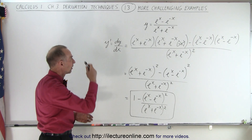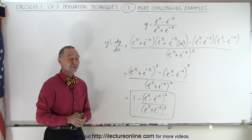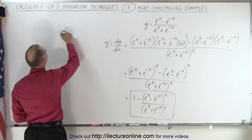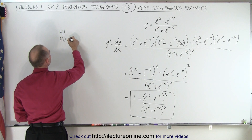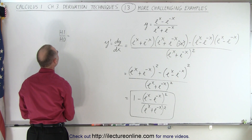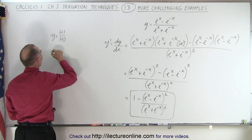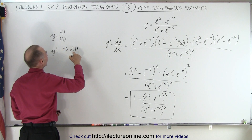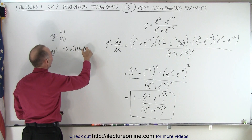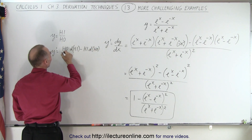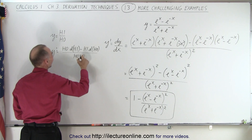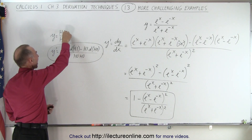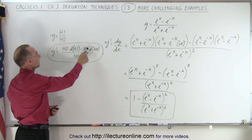And that is how we find the derivative of something that looks as strange as that. Remember — it's high over whole. If y equals high over ho, then y prime equals ho d-high minus high d-ho, all over ho-ho. Ho d-high, minus high d-ho, all over ho-ho. That's how you write it.